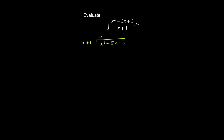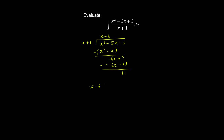x into x squared goes x times; x by x is x squared, and 1 by x is x. We subtract those and end up with minus 6x plus 5. Then x into minus 6x goes minus 6 times; minus 6 by x is minus 6x, and minus 6 by 1 is minus 6. We subtract those and end up with 11 as our remainder. Therefore this integral can be written as x minus 6 plus 11 on x plus 1.